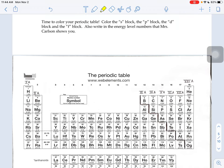So it says up here, our next thing, time to color your periodic table. Color the S block, P block, D block, and F block, and write in energy level numbers that I show you as well.